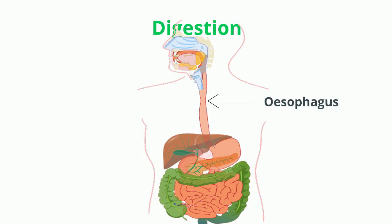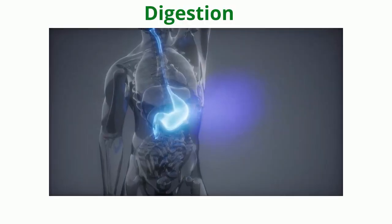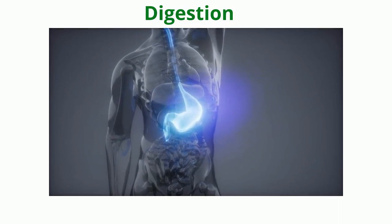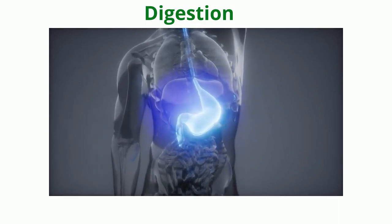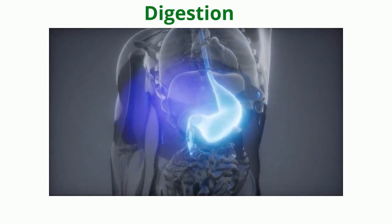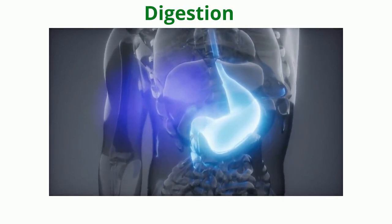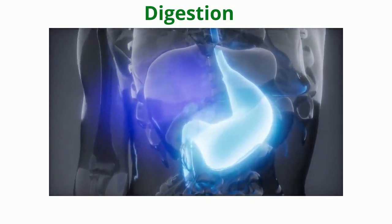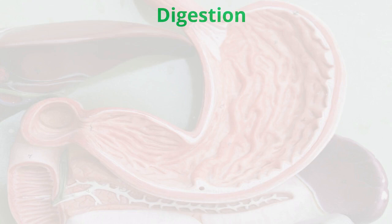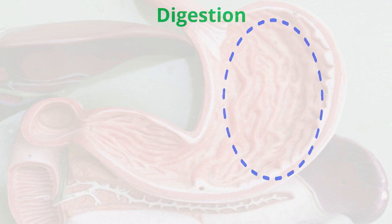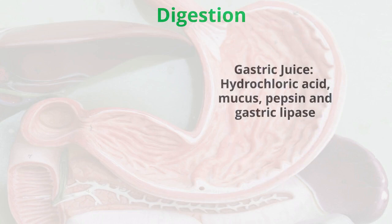Now the food has reached the stomach, which is a J-shaped large muscular organ present on the left side of the abdomen. The partially digested food is further broken down into smaller pieces and churned to form a semi-solid paste with the help of gastric juice. Gastric juice is secreted by gastric glands which are present on the wall of the stomach. Gastric juice contains hydrochloric acid, mucus, pepsin, and gastric lipase.